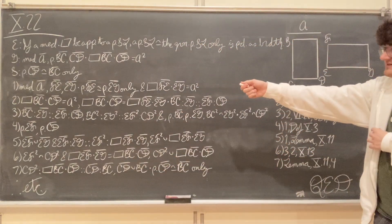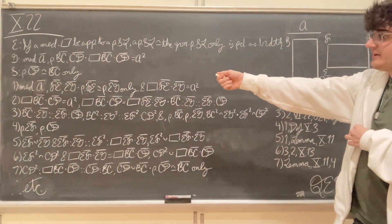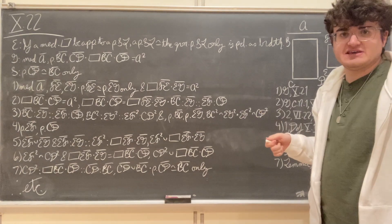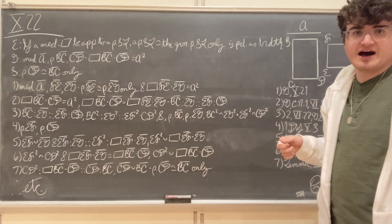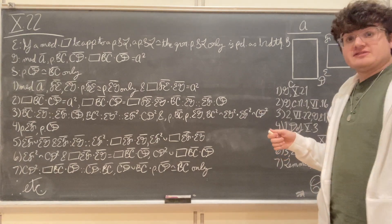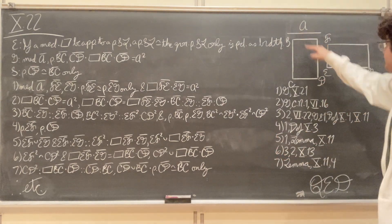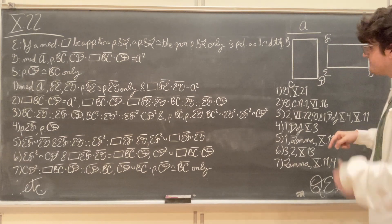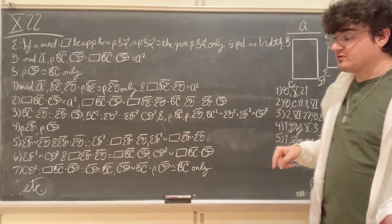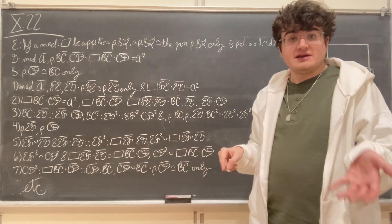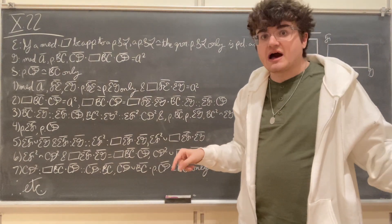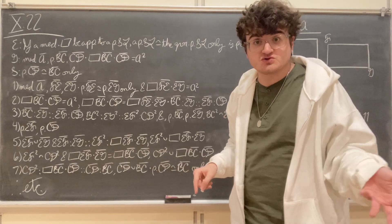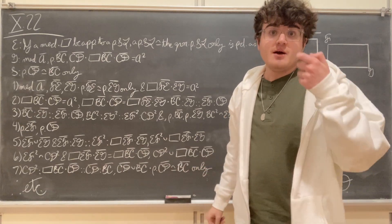Now, because the rectangle contained by BC and CD is also equal to the square on A, we know that these two rectangles — BD and FG — must be equal to each other, just by Common Notion 1, because they're both equal to A squared.